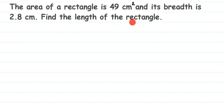So what we have given? We have given the area of rectangle — we don't have to find out the area, it's given in the question, which is 49 cm². And we have given the breadth of rectangle which is 2.8 cm. What we have to find out? We have to find out the length. We have to find out one of the dimensions — they have given breadth and they have given the area.